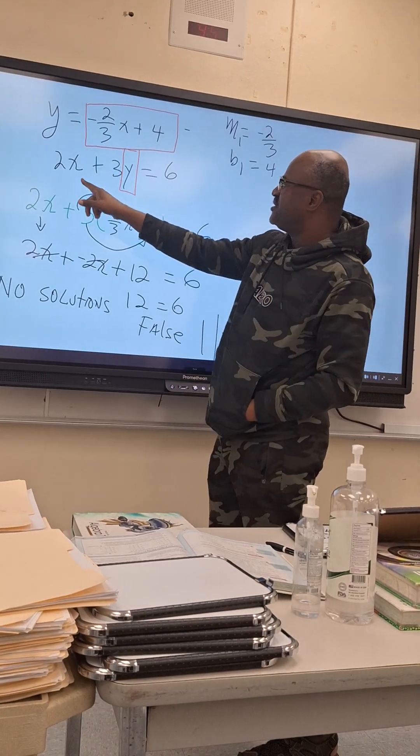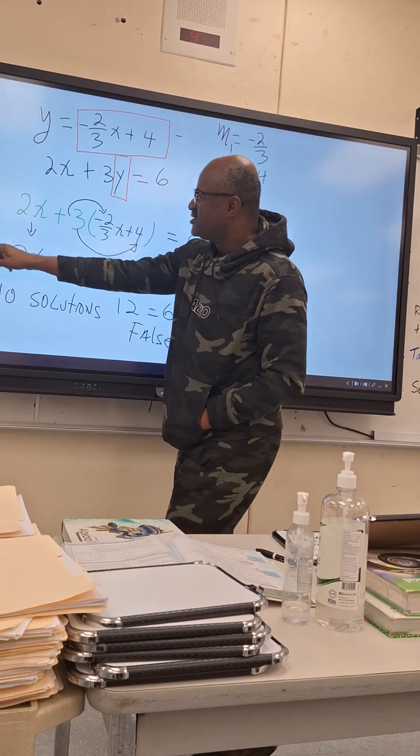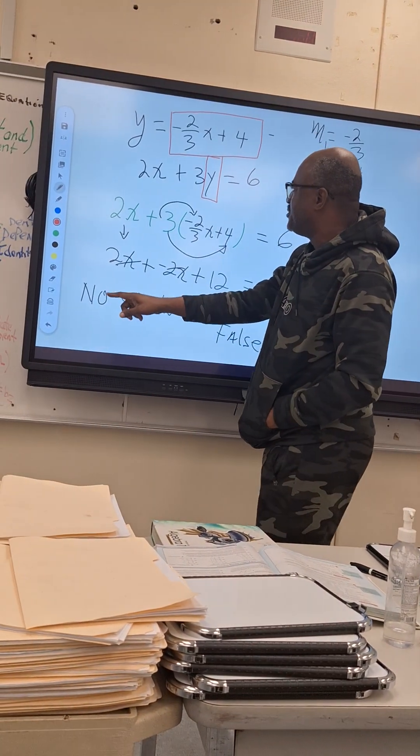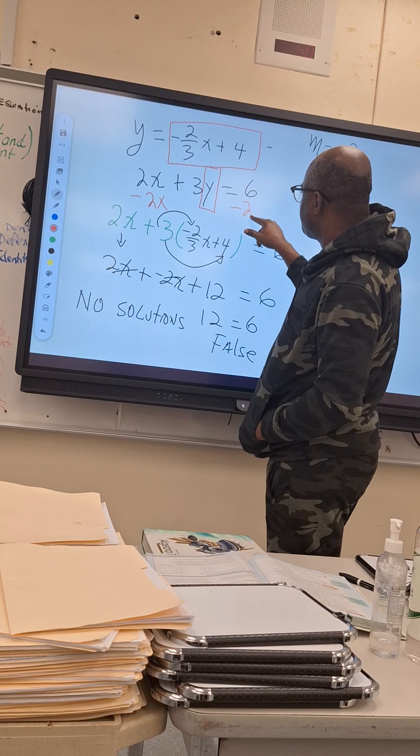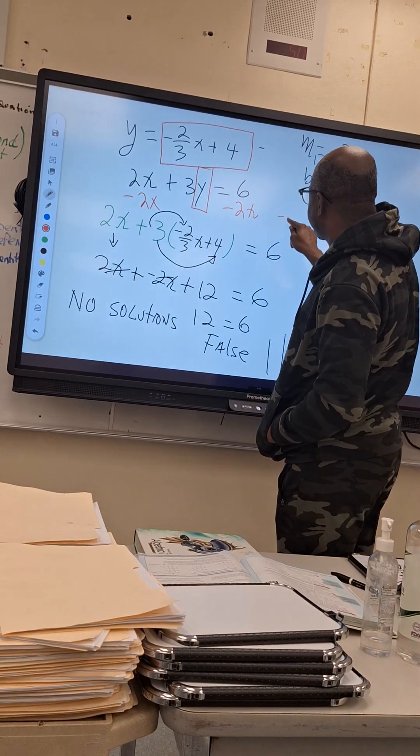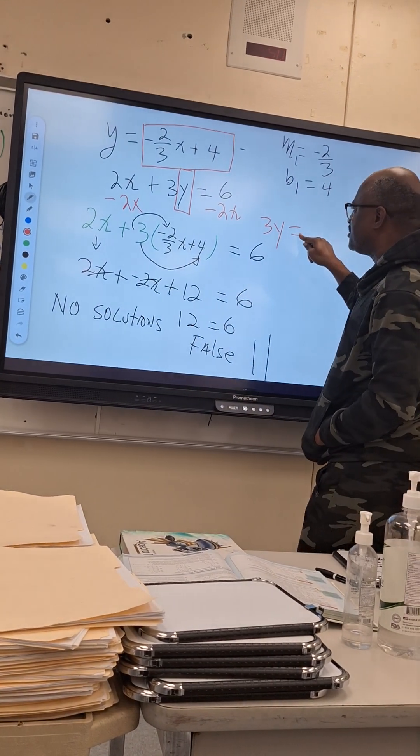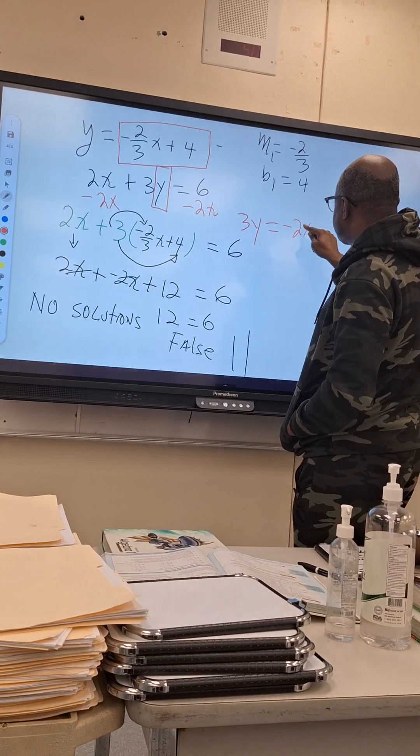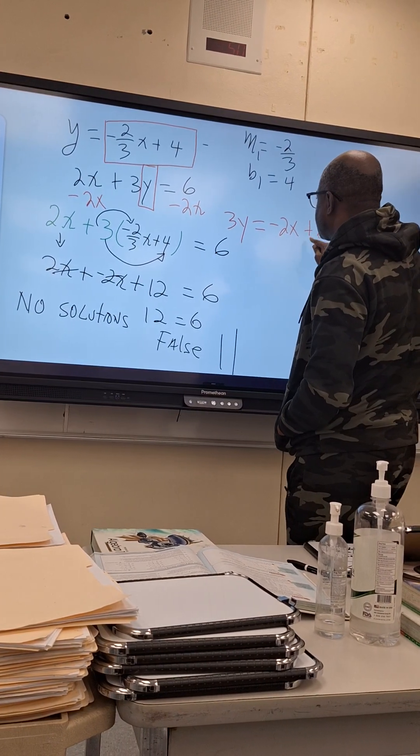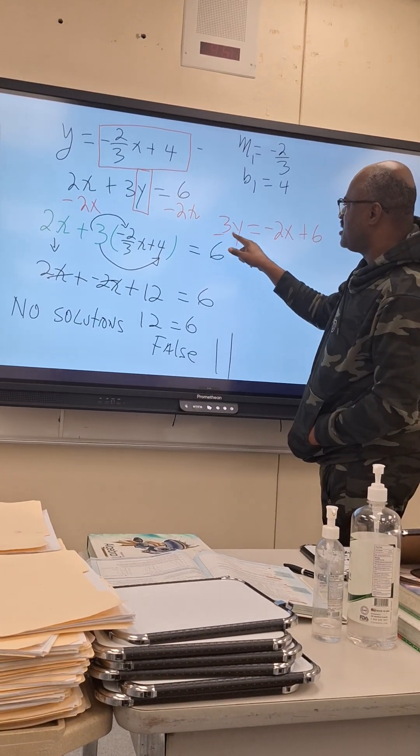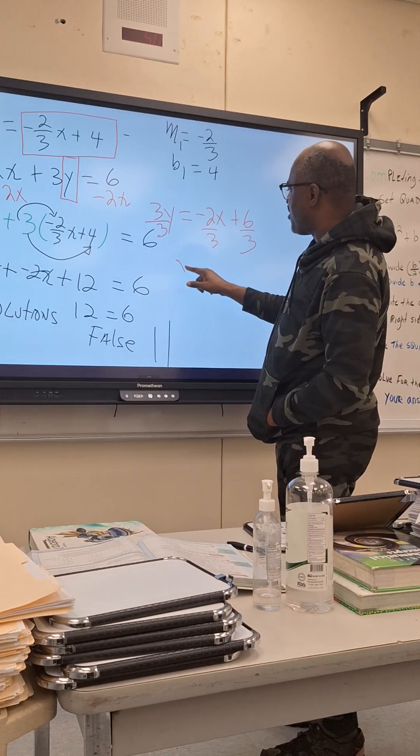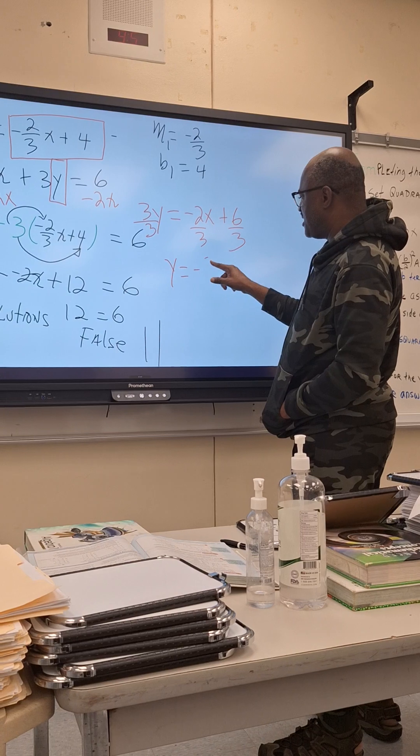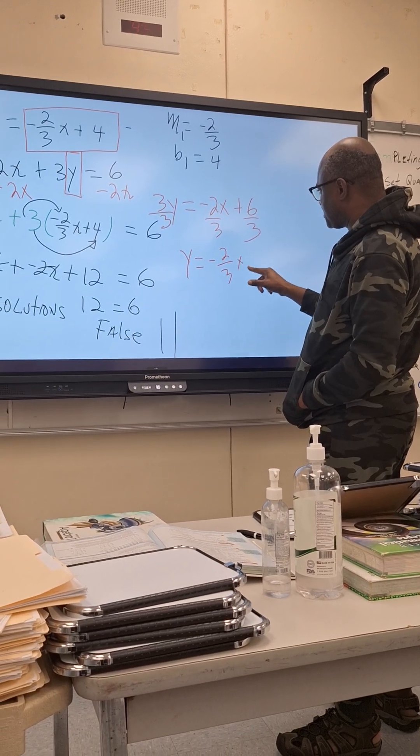So the only thing I have to do is solve for y here. So if I'm solving for y what I need to do? I'm going to minus 2x. Then I will end up with 3y equal negative 2x plus 6. Then I must divide by 3. And I will have y equal negative 2/3 x plus 2.